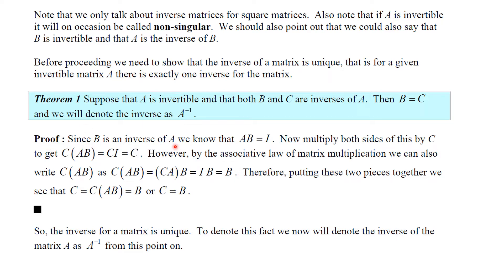Here's the proof. Since B is an inverse of A, we know that AB equals I. Now multiply both sides of AB = I on the left by C: we get C(AB) = CI = C. Using the associative law, C(AB) = (CA)B = IB = B. Therefore C = B, so the inverse of a matrix is unique, and we will call it A inverse from now on.